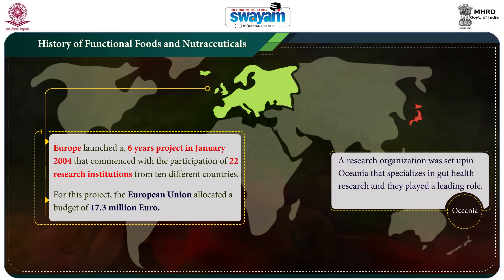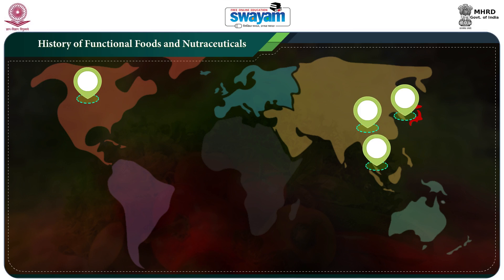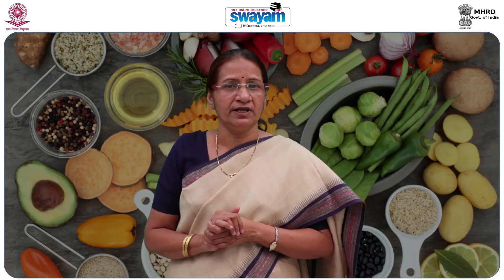A research organization was set up in Oceania specializing in gut health research, in which New Zealand and Australia played a leading role. These initiatives were replicated in Canada, China, South Korea, Singapore, and other countries to form a global network. These countries launched a clear strategy to exchange information with each other and to invest their research resources in the domains where they can capitalize on their own strengths.